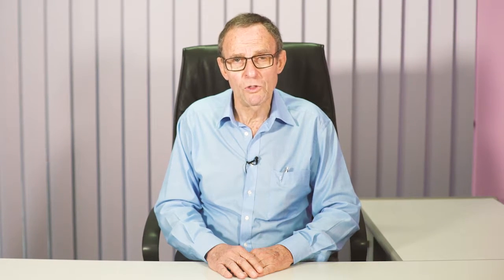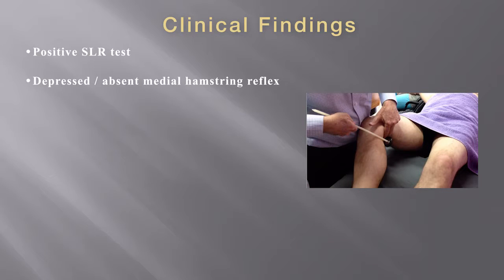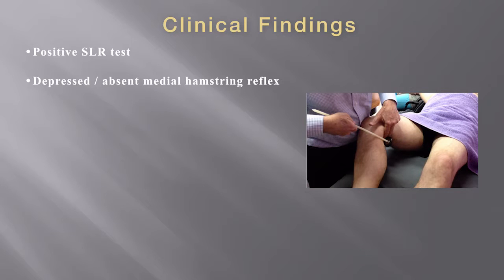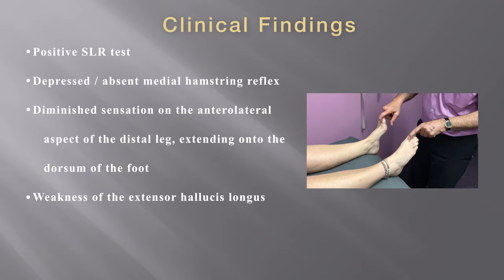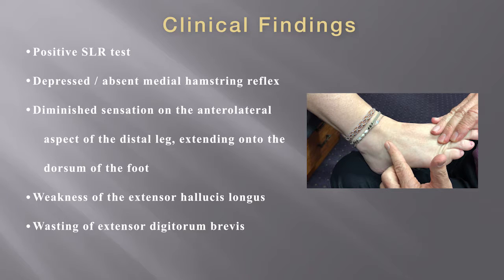It certainly seems that wasting of extensor digitorum brevis is a common finding in cases of L5 nerve root lesions, but a sign that has been underutilized. In summary, the clinical findings in a case of L5 nerve root involvement might include: a positive straight leg raising test, depressed or absent medial hamstring reflex, diminished sensation on the anterolateral aspect of the distal leg extending onto the dorsum of the foot, weakness of extensor hallucis longus, and wasting of extensor digitorum brevis.